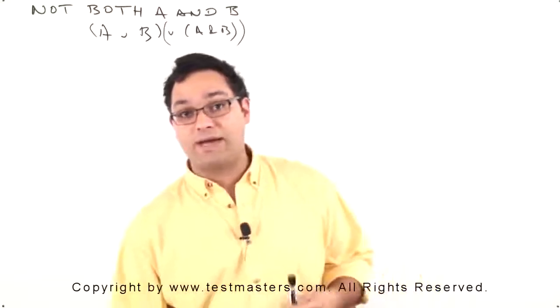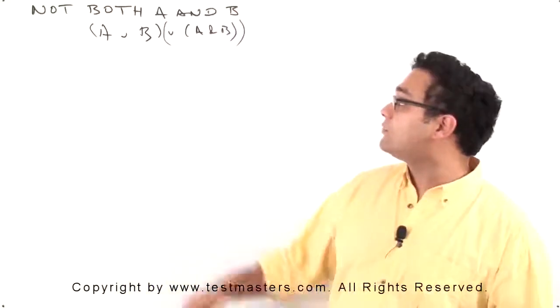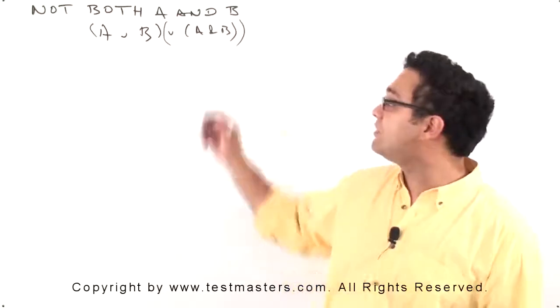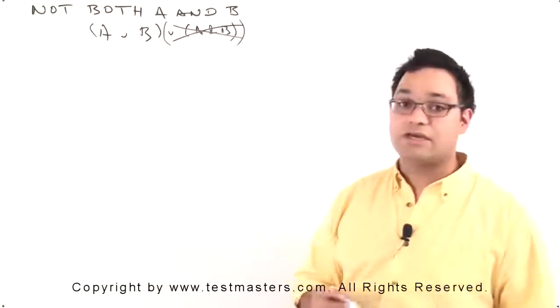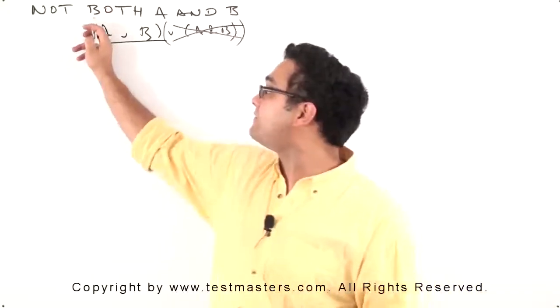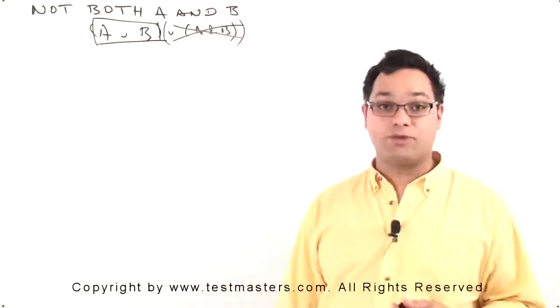So, when we talk about ors, just to refresh your memory, it will always be an inclusive or. If you see A or B or both, just remember, the or both part is redundant. It doesn't have to be written out. And in fact, this is sufficient for A or B or both.